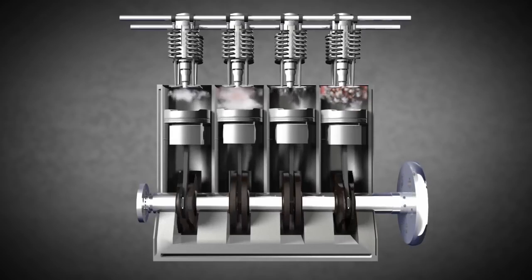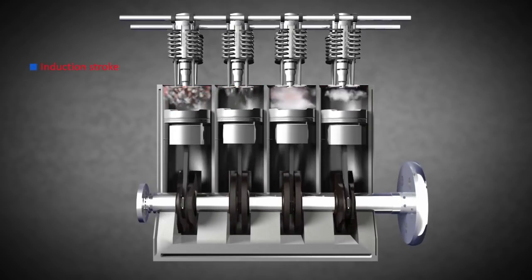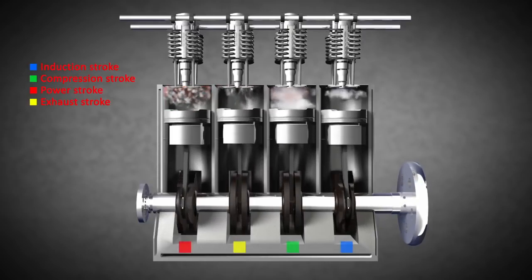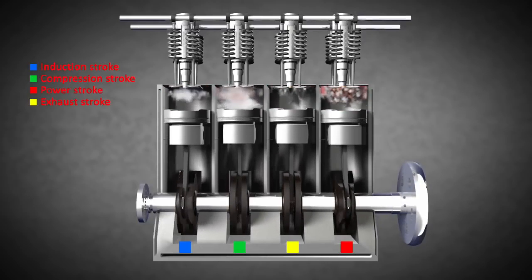A four-stroke diesel engine has the same strokes as an Otto-cycle engine: induction stroke, compression stroke, power stroke, and exhaust stroke.